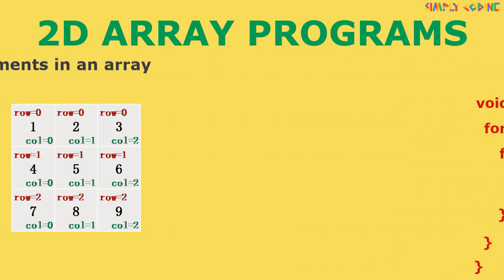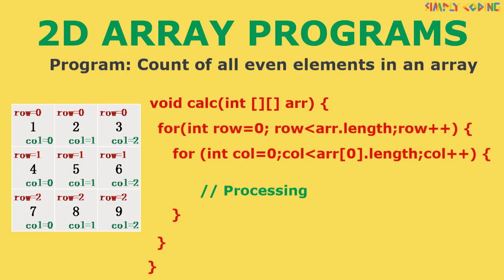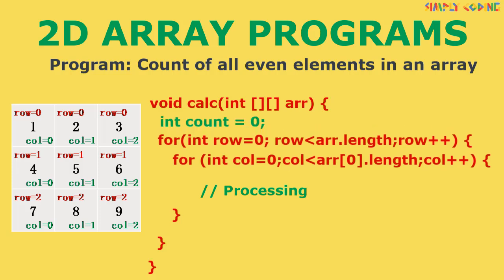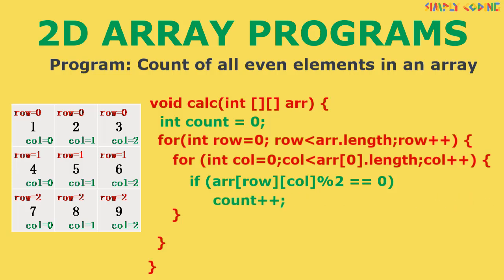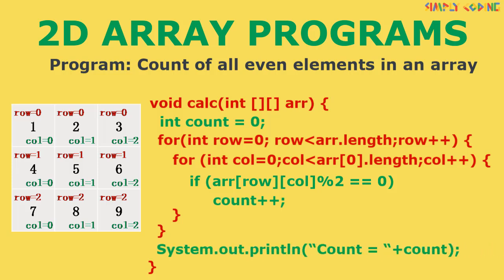You could also get count kind of programs, like counting all even numbers in the 2D array. We initialize a variable count to 0 before traversal. Inside the loop, we check if the element is even, and if yes, we increment our count. Once traversal is finished, we print the count. You could get multiple variations — like count of odd numbers, buzz numbers, prime numbers, etc. You just need to change your if condition as per your program and the program is ready.